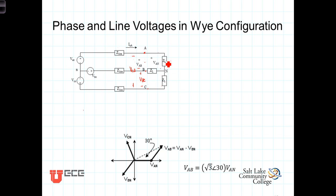We have VAN is the voltage across the A phase, plus to minus VBN is the voltage across the B phase, and VCN plus to minus VCN is the voltage across the C phase.